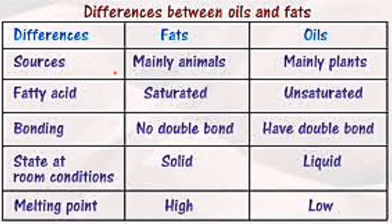The main sources of fat are animal, whereas in case of oil it is plant. The fatty acids in case of fats are saturated, and in case of oil they are unsaturated. When there is a saturated fatty acid in the fat, the double bond is not present, whereas in case of oil there will be a double bond because it has unsaturated fatty acids.